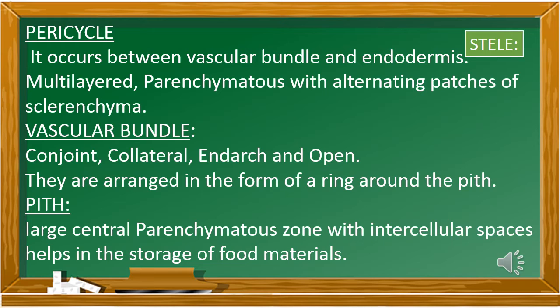Next is end-arch. End-arch refers to the location of the protoxylem. Protoxylem lies towards the center, meaning metaxylem lies towards the periphery. The smallest xylem vessels lying towards the center — such bundles we call end-arch. The fourth term is open: when there is a layer called cambium between xylem and phloem, we call such a vascular bundle an open vascular bundle.